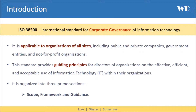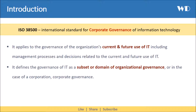It is organized into three prime sections: scope, framework, and guidance. It applies to the governance of the organization's current and future use of information technology, including management processes and decisions related to the current and future use of information technology. It defines the governance of IT as a subset or domain of organizational governance, or in the case of a corporation, corporate governance.